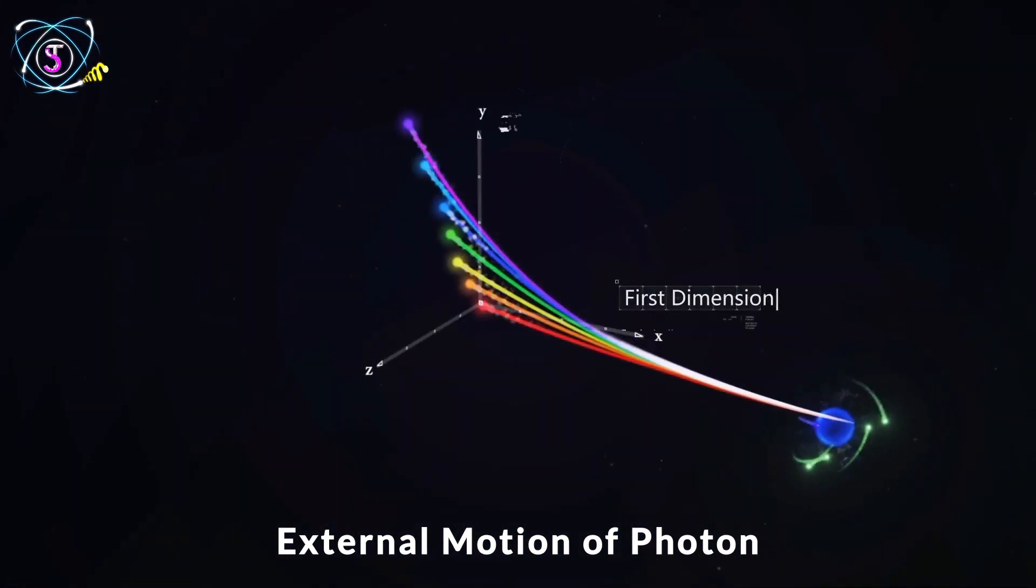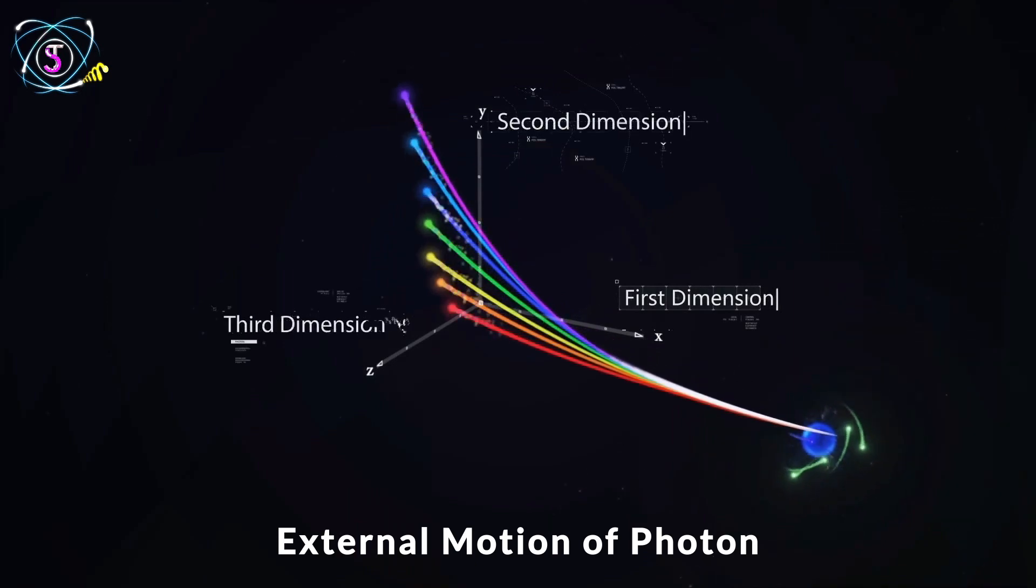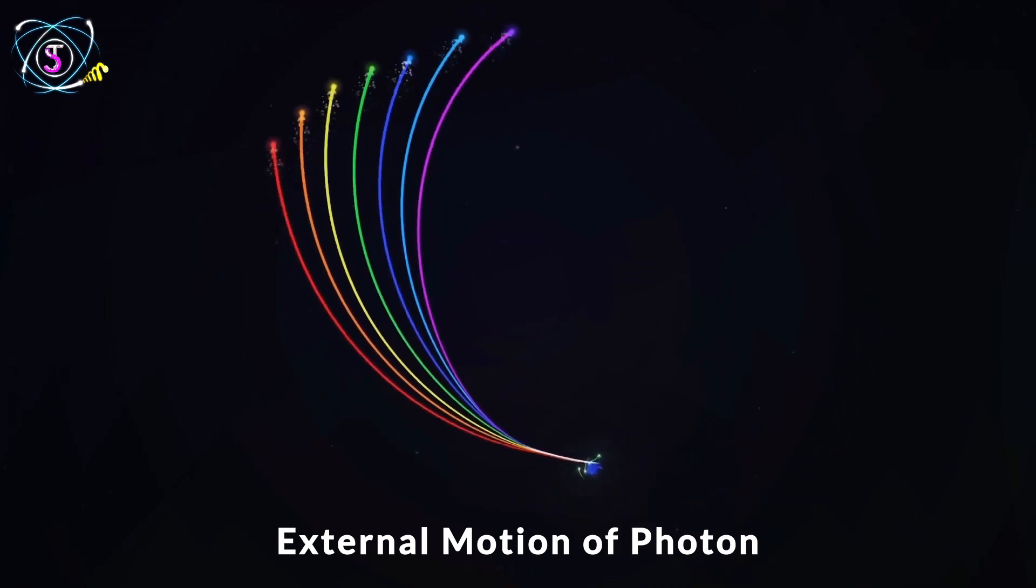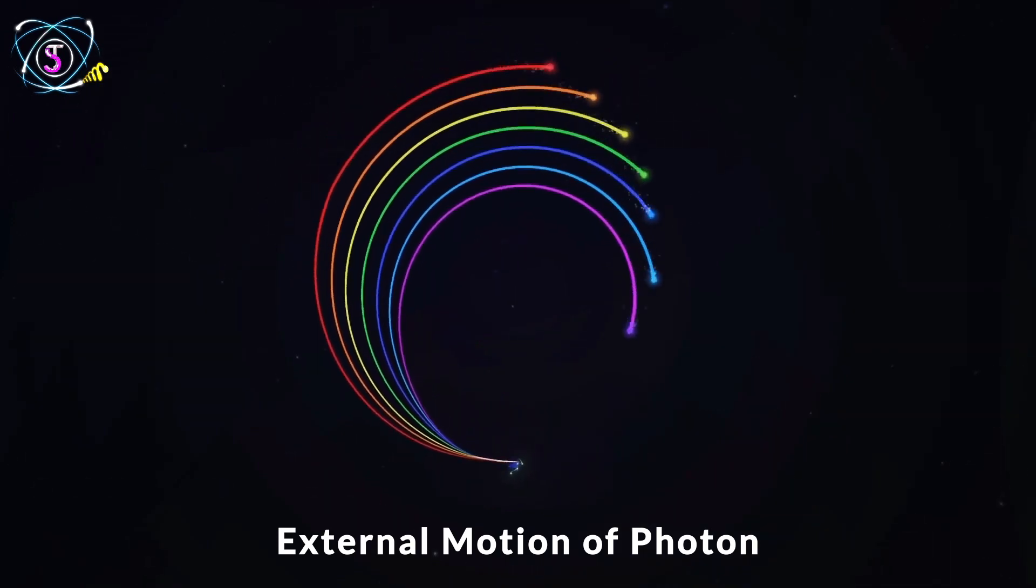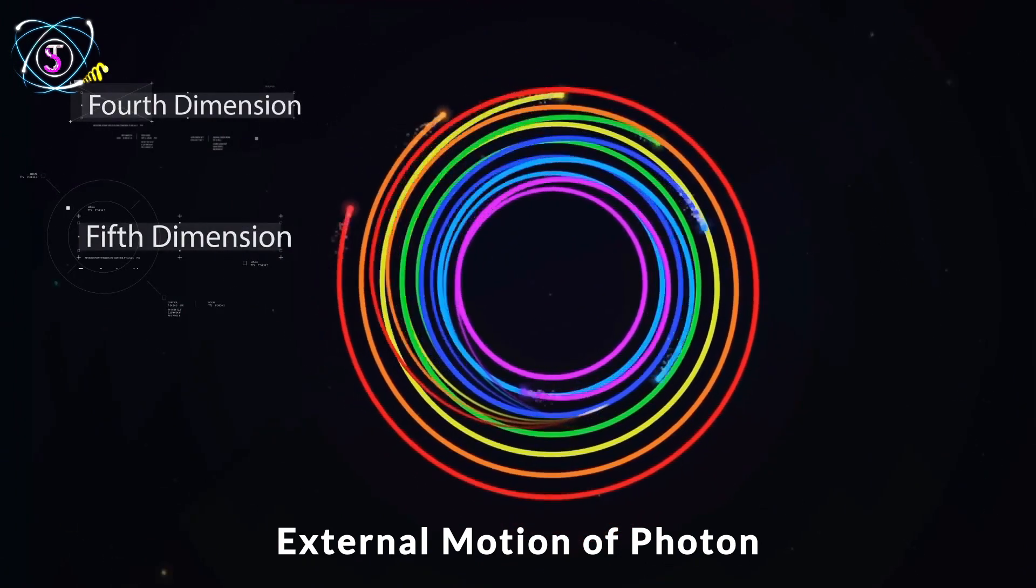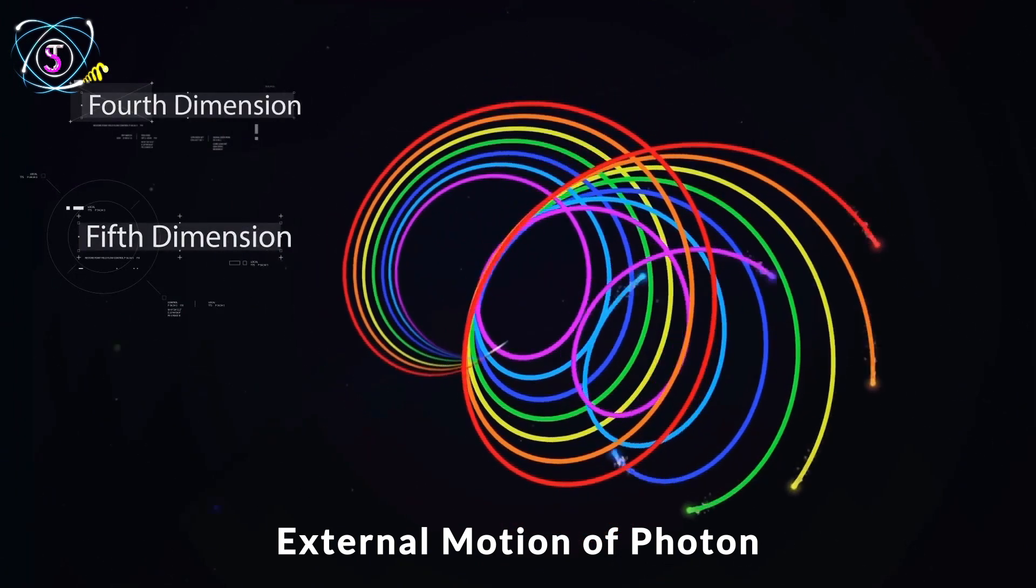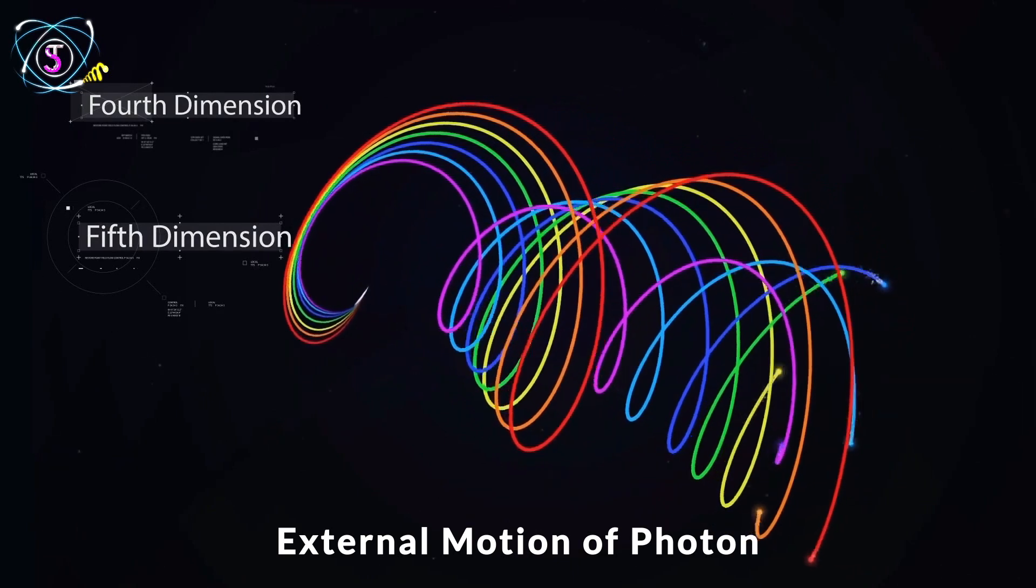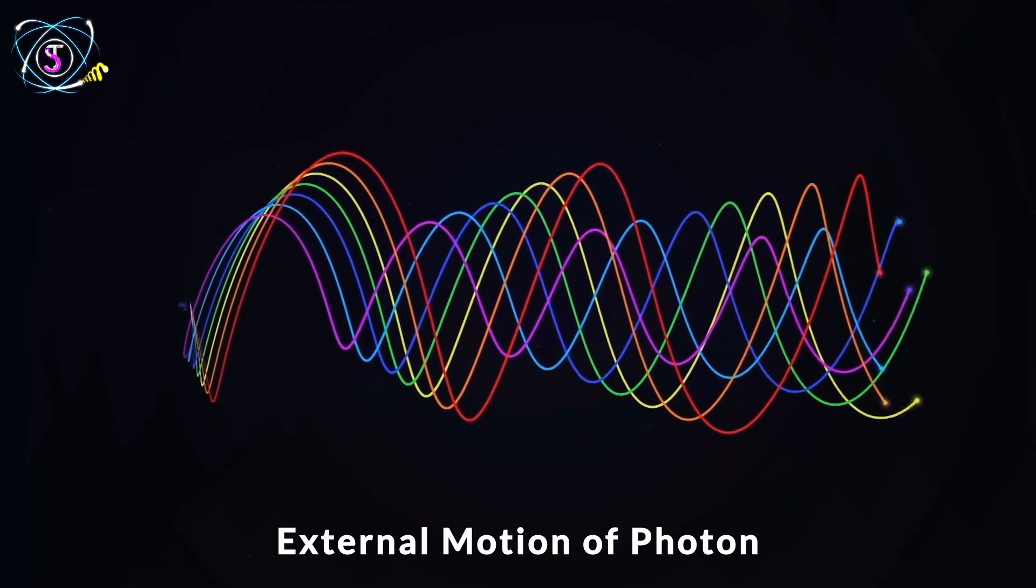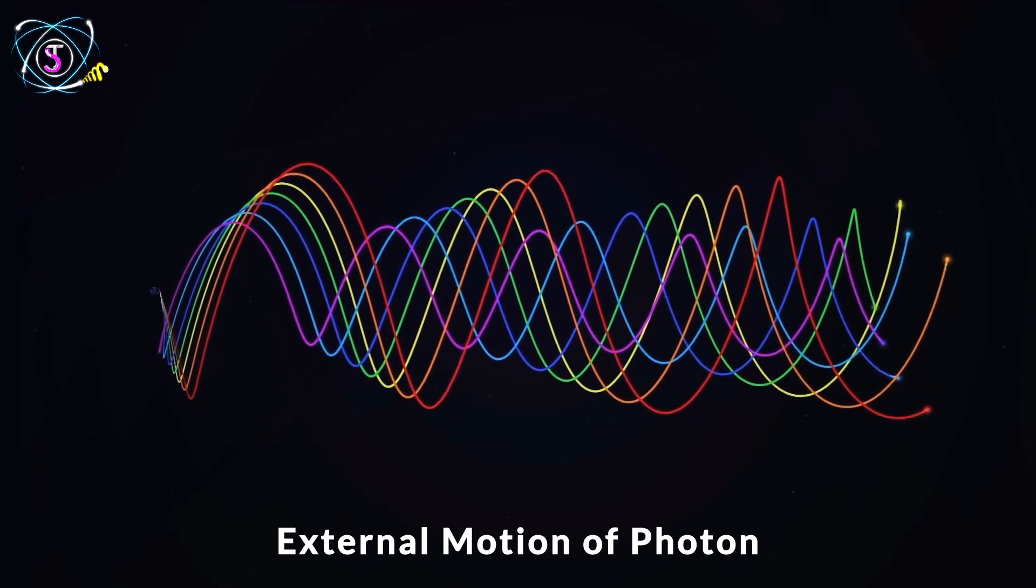a forward motion with velocity equals to c which performs in 3 dimensions and a rotational motion in a 2-dimensional plane, so the external motion could be explained in 5 dimensions.